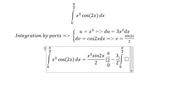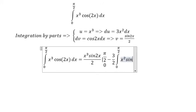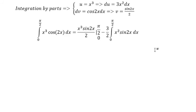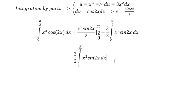We pull the factor of 3/2 outside and have x to the power of 2 times sine 2x dx. Substituting 0 gives 0, so that term is eliminated. Now we need to solve this remaining integral using integration by parts again.